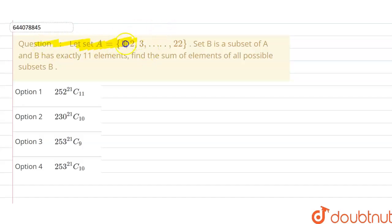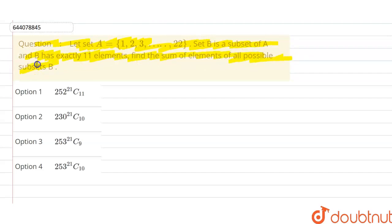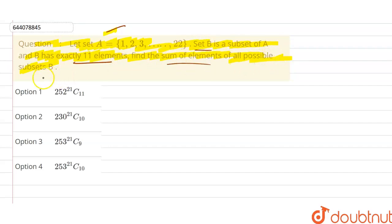Hi everyone. Our question is: let set A be equal to {1, 2, 3, ..., 22}. Set B is a subset of A and B has exactly 11 elements. Find the sum of the elements of all possible subsets of B.